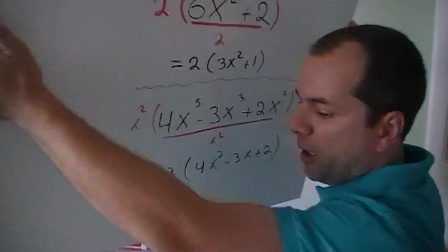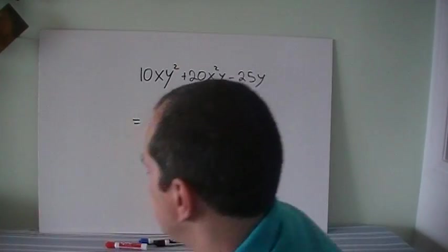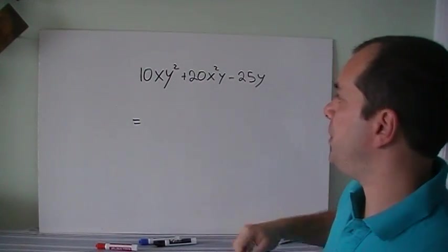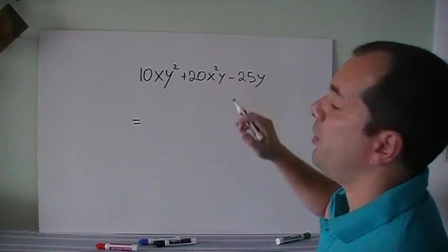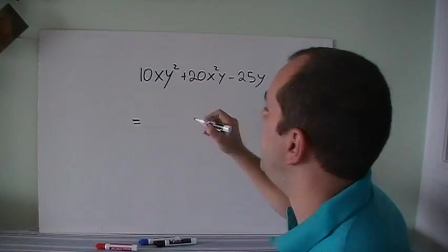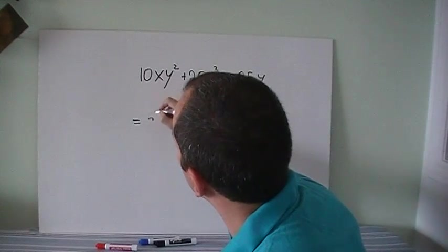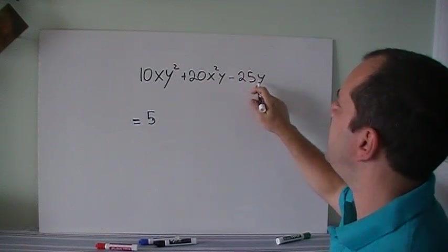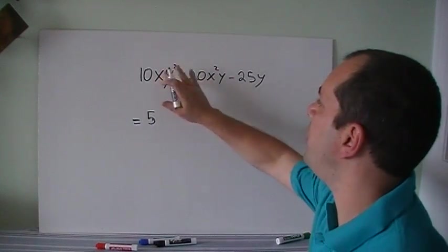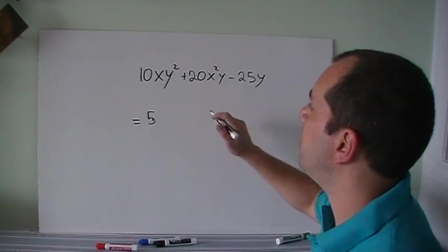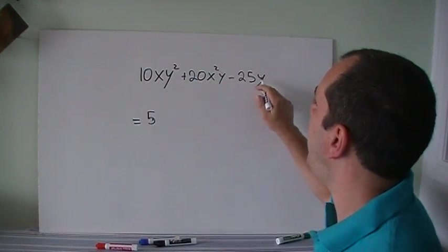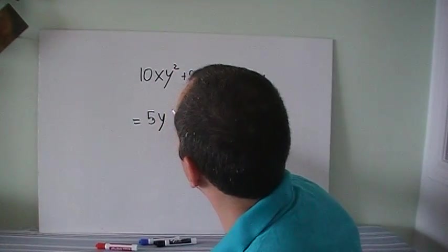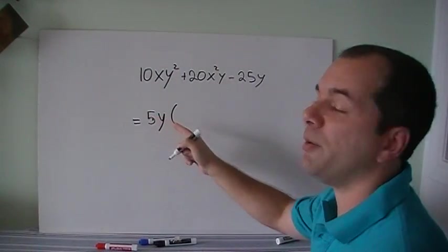The last example is when we can possibly take two things out. I'm going to do it without using the red marker, without doing the divided by. I got 10, 20, and 25. So we can probably take out a 5. I've got x, I've got x, and I don't have x here. So I can't take x's out because they're common here, but they're not common on all terms. Let's look at the y's. So y squared, y, and y. So the most I can take out from all terms is 1y. So I'm going to take a y outside, open bracket.